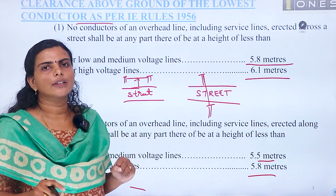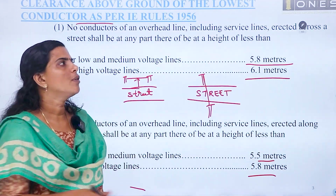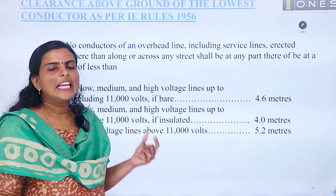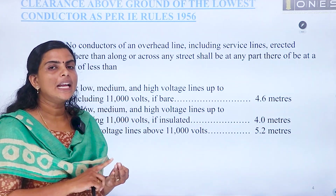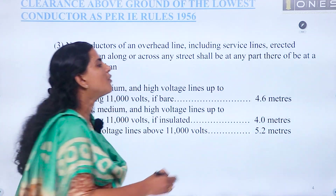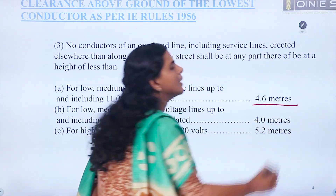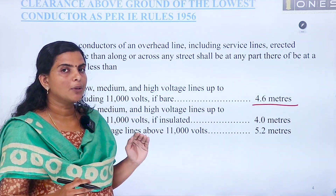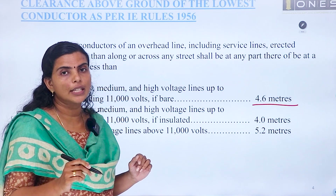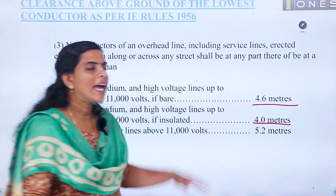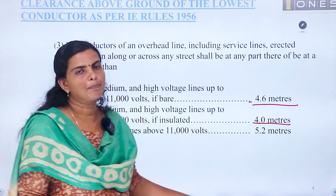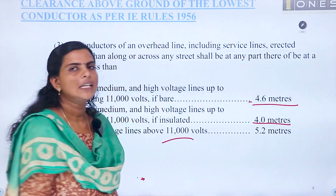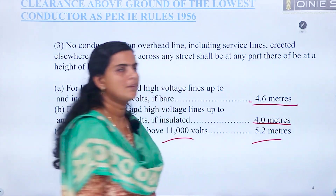Those are the conditions for across the street and along the street. Now, if the conductors are bare — with insulation on the line — for low, medium, and high voltages up to 11 kV, the ground clearance should be at least 4.6 meters. If the conductors are insulated, the ground clearance should be 4 meters. So bare conductors require more clearance than insulated conductors. For high voltages above 11 kV, the ground clearance should be 5.2 meters.